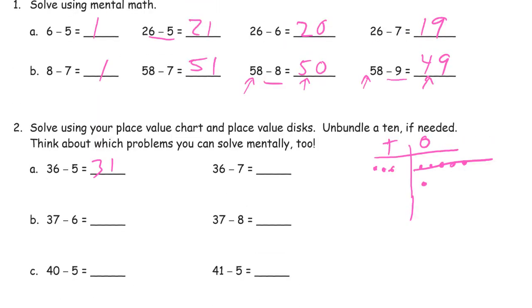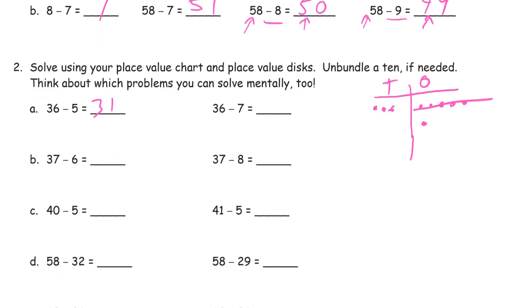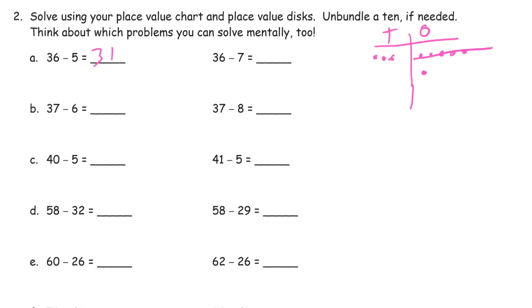Now, think about what we did up here. 58 minus 8 was 50. If we take away one more, we have one less left. Well, here we have the same minuend — 36 and 36. So if I take away two more, my difference should be 2 smaller. It should be 29, right?